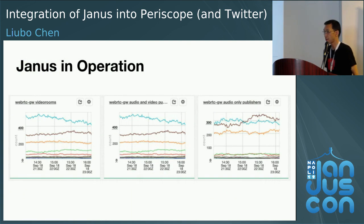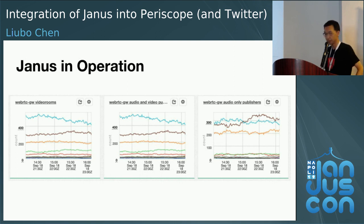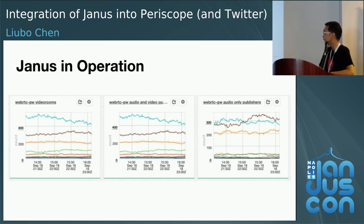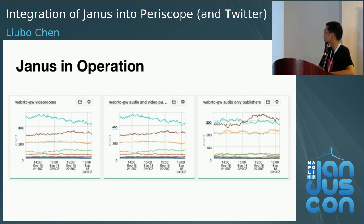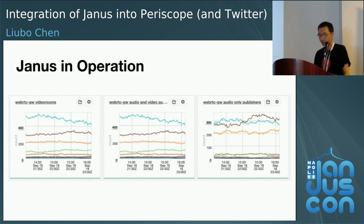This is Janus in operation. We have a dashboard monitoring behavior across all 12 regions — for example, how many video rooms are currently active, how many audio-video broadcasters, and how many audio-only publishers we have at any given moment. From this graph you might think the numbers are small, but we are actually serving more than 100,000 broadcasts daily using Janus right now. That concludes my presentation.